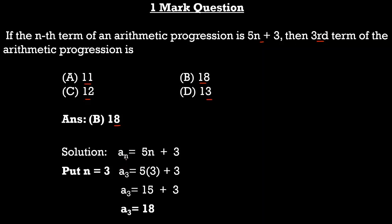The solution is very simple. To find the third term, put n = 3 in the given expression: a₃ = 5(3) + 3 = 15 + 3 = 18. Therefore option B, 18, is correct.